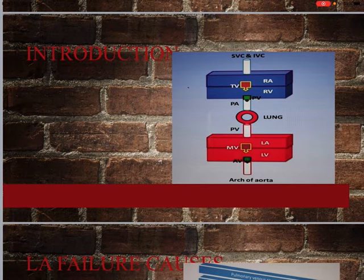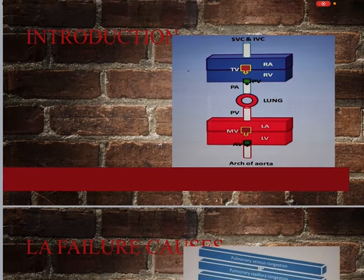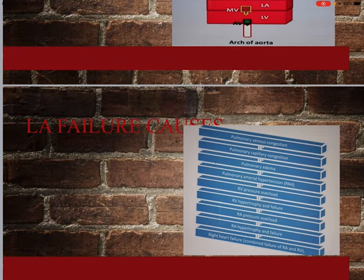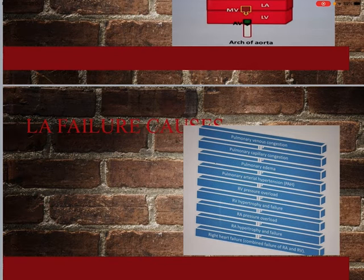The left atrium has already dilated and cannot tolerate the pressure. It eventually fails. Left atrial failure leads to pulmonary capillary congestion and pulmonary edema. Pulmonary edema leads to pulmonary artery hypertension. The pulmonary artery connects to the right ventricle, so there is right ventricular overload, right ventricular hypertrophy, and then right ventricular failure, right atrial pressure overload, and right atrial failure — all due to mitral stenosis. Notably, the left ventricle does not have pressure overload, so it does not dilate or hypertrophy. This is a three-chamber involvement.